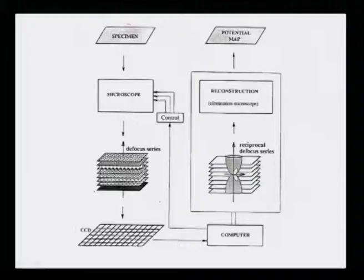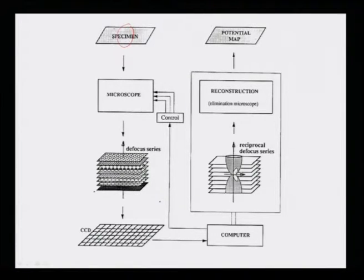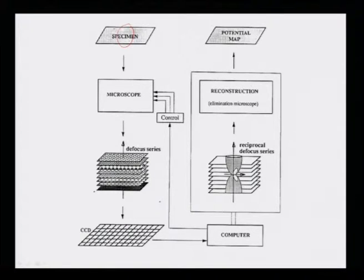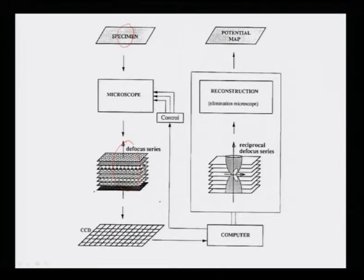In a nutshell, to show you a simple simulation cycle: electrons from the gun fall on the specimen after going through different lenses, the interaction is dynamical in nature, and then they pass through the intermediate and projector lenses to finally form an image on a CCD camera. We always acquire a defocus series of images where defocus is varied systematically, and these black-and-white dot images are fed into the computer.